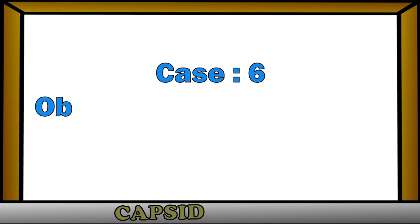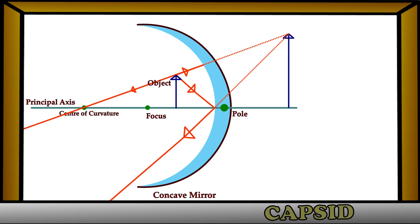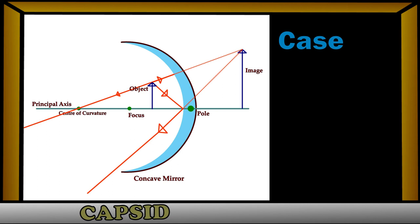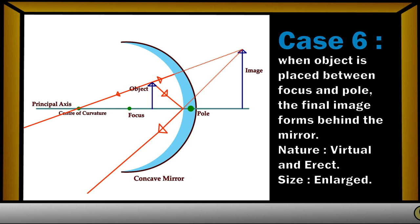Case 6: the object is placed between the focus and pole. When the object is placed between the focus and pole, the rays coming from the object actually never meet after reflection through the concave mirror, but appear to meet beyond the mirror. So the final image forms beyond the mirror. The nature of the image will be virtual and direct, and the size of the image will be enlarged.